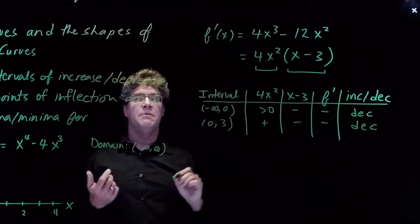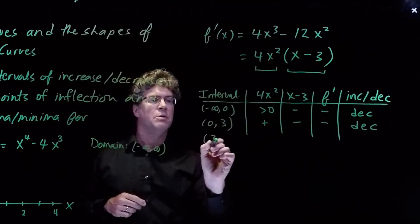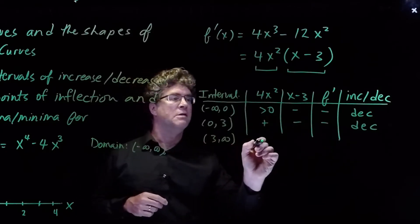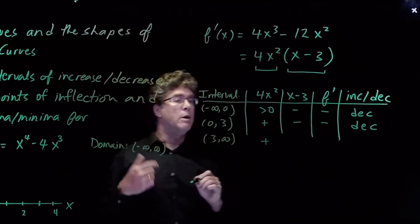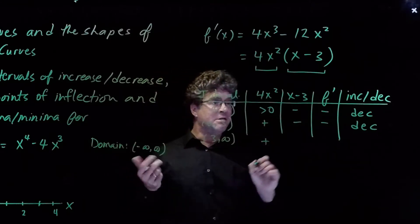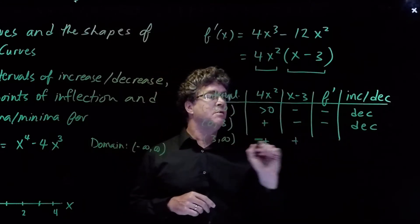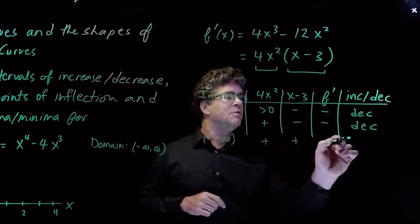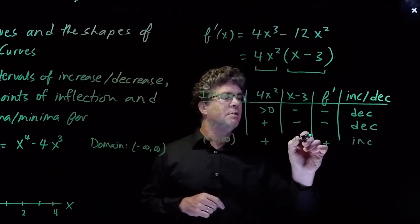On the final interval from 3 to infinity, 4x squared is again positive. However, x minus 3 is also positive. So f prime is positive, and so the function is increasing.